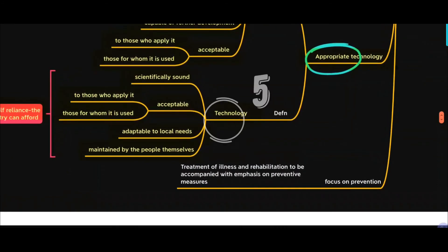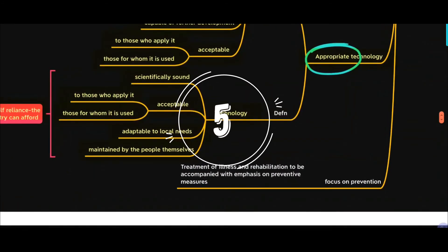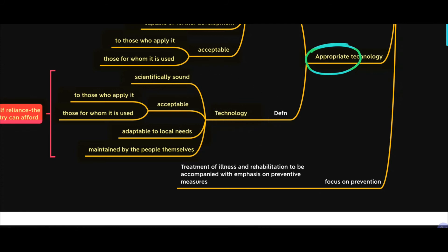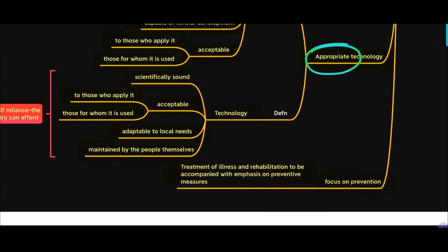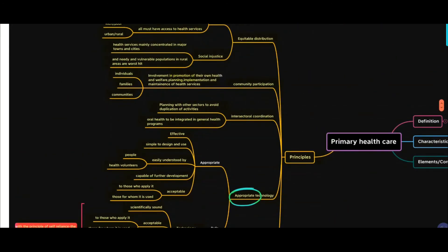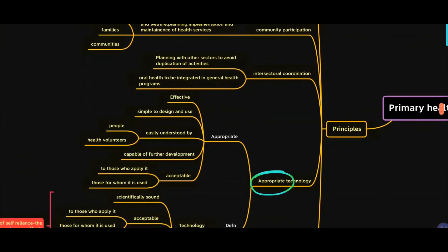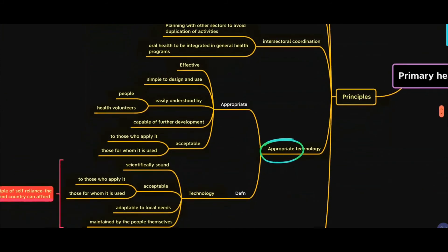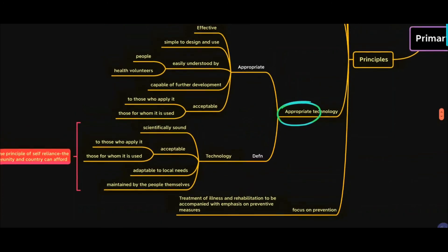The last principle is focus on prevention: treatment of illness and rehabilitation should be accompanied with emphasis on preventive measures. You should treat and rehabilitate affected patients, but there should be a lot of emphasis on preventive measures. So these are your five principles of primary health care: equitable distribution, community participation, intersectoral coordination, appropriate technology, and focus on prevention.